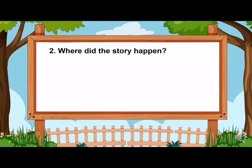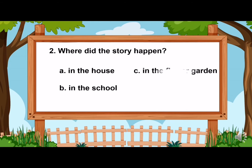Question number two: Where did the story happen? Letter A, in the house. B, in the school. C, in the flower garden. And letter D, in the city.